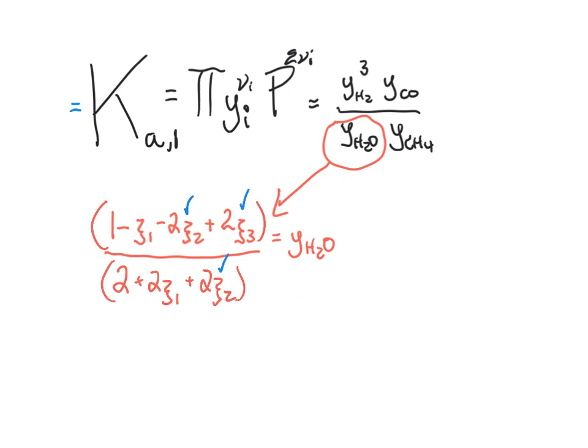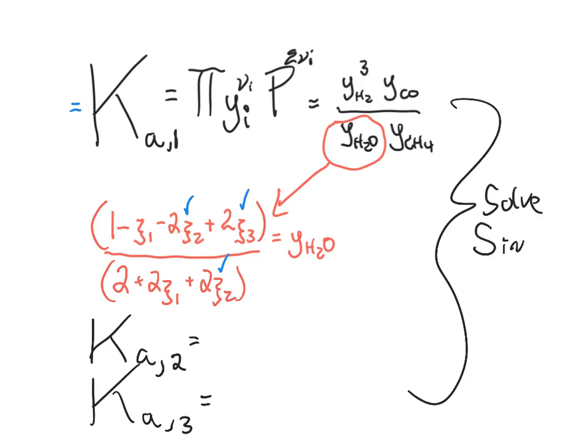And so for me to figure out what's going on here, I will also need to write Ka for reaction two and Ka for reaction three and solve them all simultaneously. And that is going to be a matter of ugly, but still just algebra. Right? Because all of these are just going to be polynomial expressions in terms of ξ1, 2 and 3.